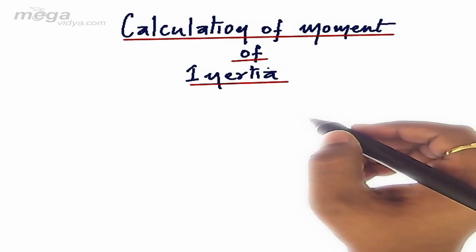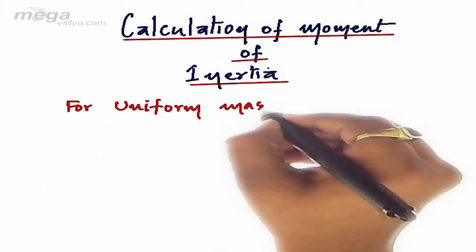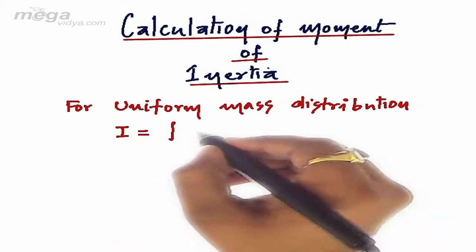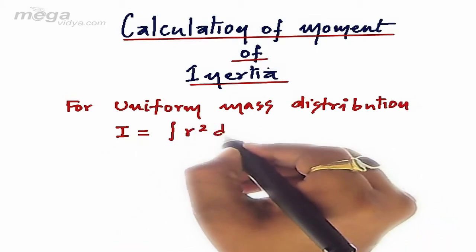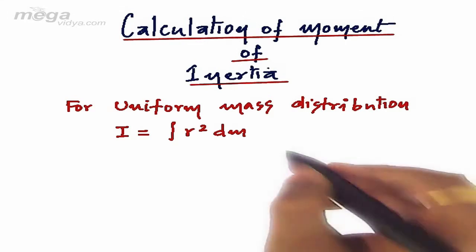Calculate the moment of inertia for uniform mass distribution. As we have already studied, for uniform mass distribution, the moment of inertia is equal to integration of r squared dm, where integration is taken along specified limits.